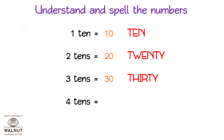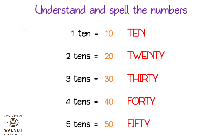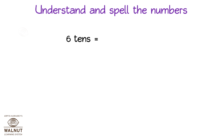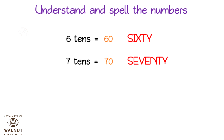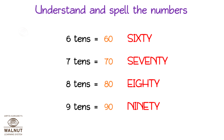Four tens is equal to forty — F-O-R-T-Y — 40. Five tens is equal to fifty — F-I-F-T-Y — 50. Six tens is equal to sixty — S-I-X-T-Y — 60. Seven tens is equal to seventy — S-E-V-E-N-T-Y — 70. Eight tens is equal to eighty — E-I-G-H-T-Y — 80. Nine tens is equal to ninety — N-I-N-E-T-Y — 90.